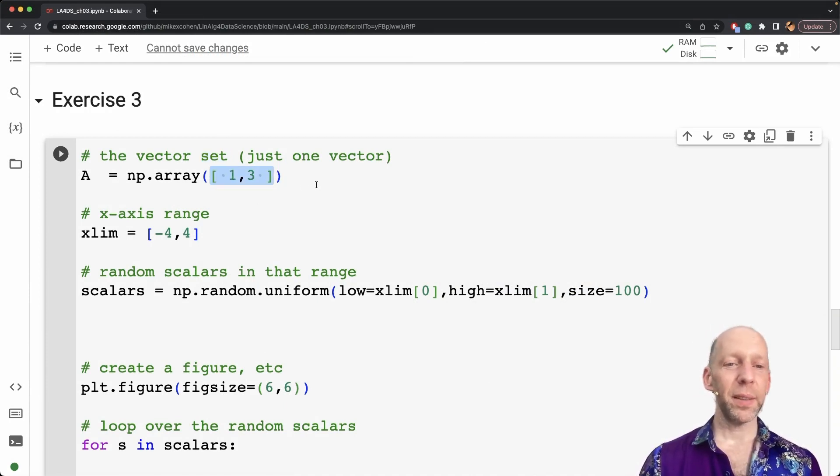This is another one of these cases, which I discussed in some of the exercises from the previous chapter from chapter two, where orientation doesn't matter. So it doesn't matter if you create this as a row vector or a column vector, or as I have done here, an array without any orientation, that's fine for this particular application, because we are going to be using these points as coordinates to plot lines.